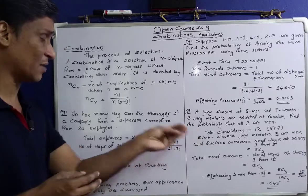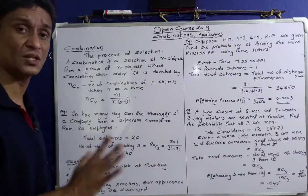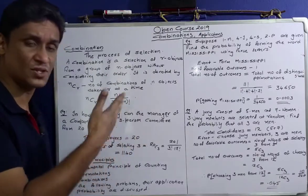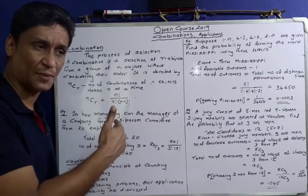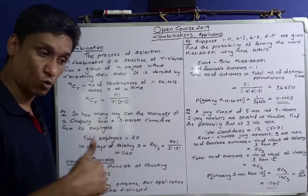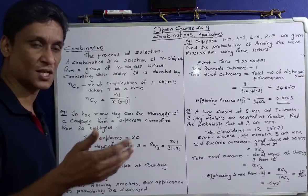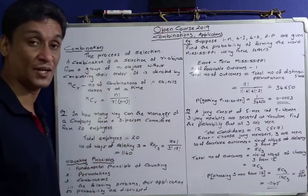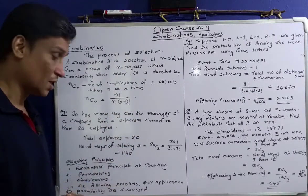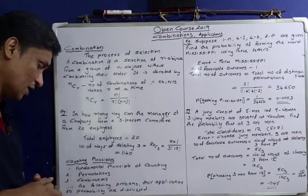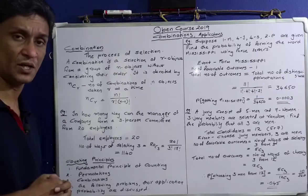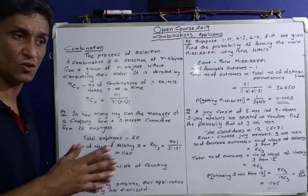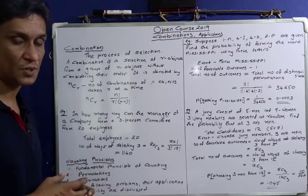We are going to do two examples in this video and a lot of problems in the text. We are going to discuss the fundamental principle of counting. If a task can be performed in m ways and a second task can be performed in n ways, then the total number of ways is m times n. It is the fundamental principle of counting.